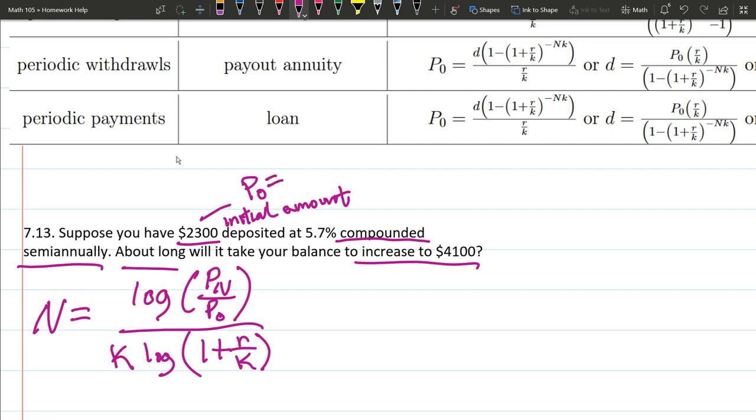So that means it's our principal amount at the zero month. Well, the zero. This is semi-annually, so after zero semi-annuals, which is after zero half years. So our initial amount is $2,300.